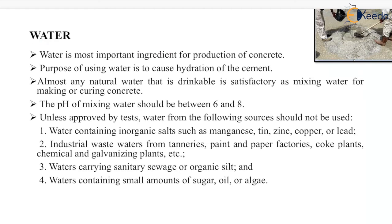The next constituent is water. Water is the most important ingredient for production of concrete; its purpose is to cause hydration of cement. Without water, the hydration process will not take place, and without hydration, cement will not harden and the strength of concrete will reduce. Almost any natural water that is drinkable is satisfactory as mixing water. The pH of mixing water should be between 6 to 8, which is the pH range of drinking water.